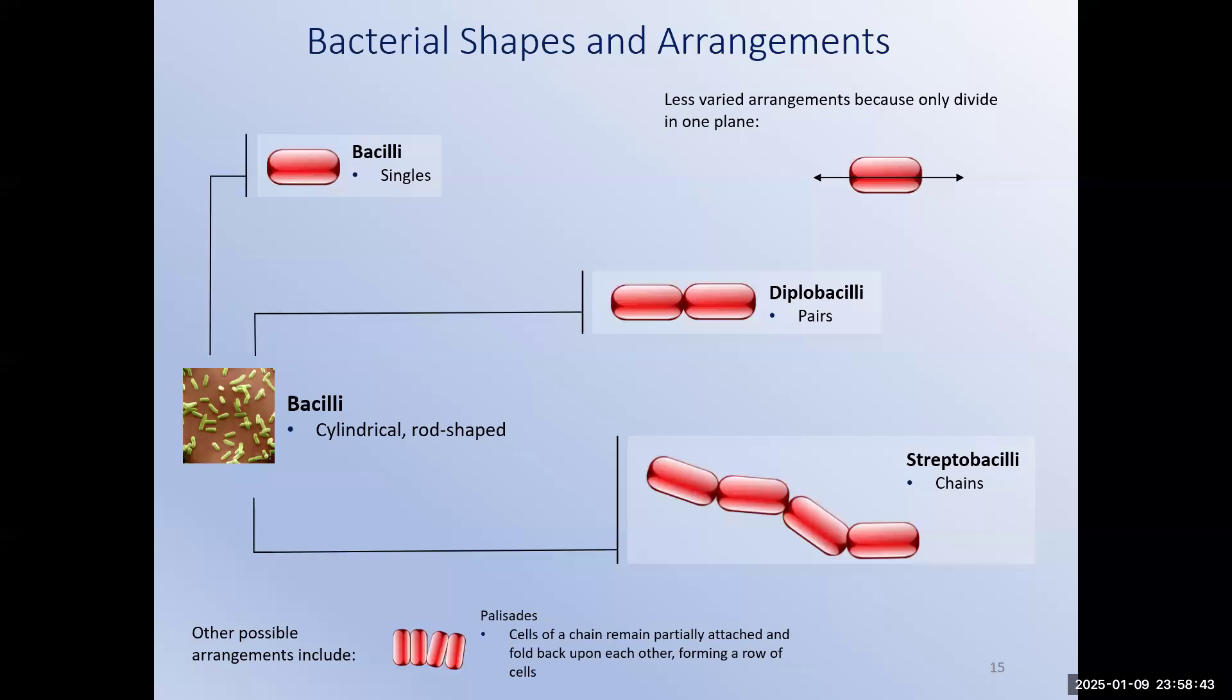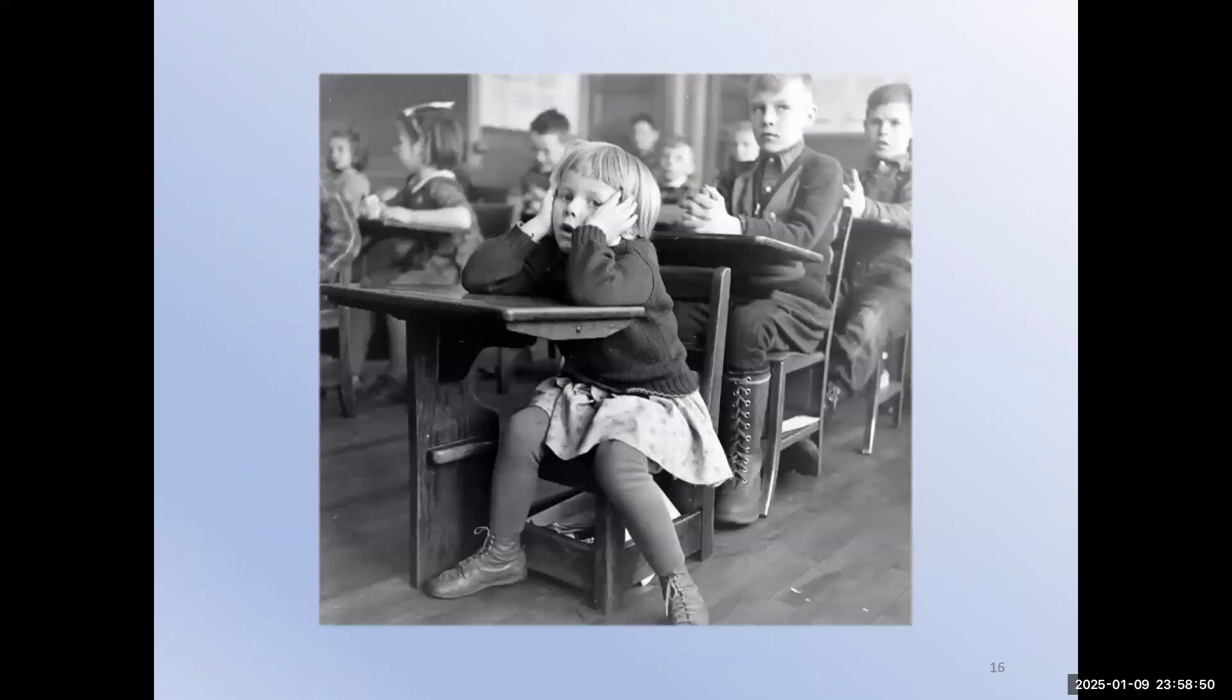Vibrio, Spirillum, and Spirochetes rarely stay attached when they divide, so there are no real particular arrangements for them. As I mentioned, knowing shapes and arrangements of bacteria is incredibly important to identify them. Let's take a look at one.